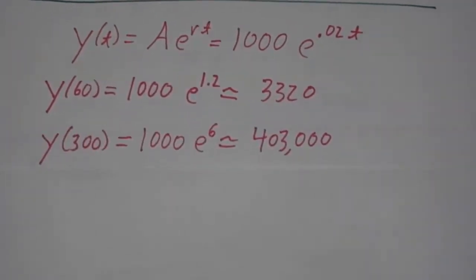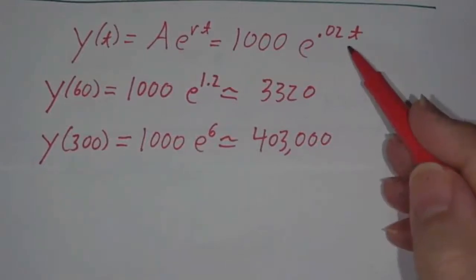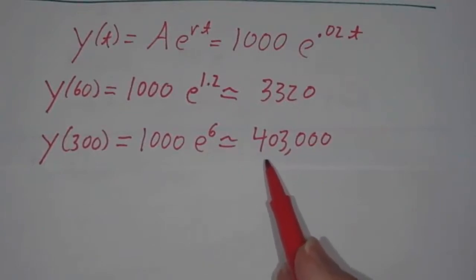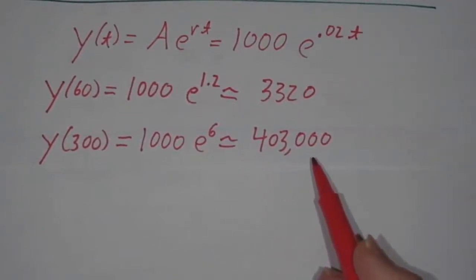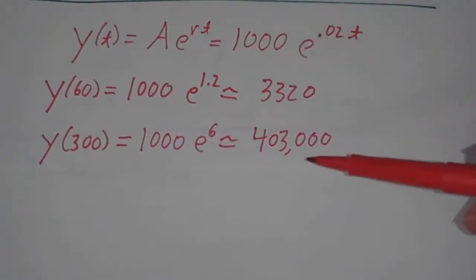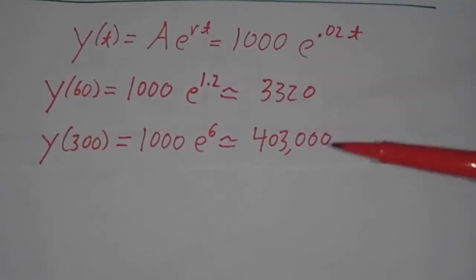After five hours, that's 300 minutes. Well, 300 times 0.02 is 6. So it's 1,000 times e to the 6. That's about 403,000 bacteria. So starting with a fairly small number, you could come back five hours later and wind up with a huge number. This is why you might go to bed feeling just fine and wake up in the morning feeling really sick. The bacteria in your lungs or your guts or wherever it is that you have an infection grew like crazy overnight.